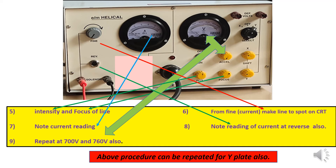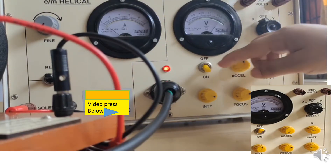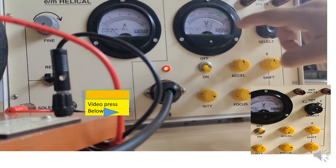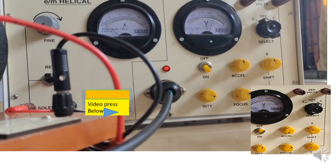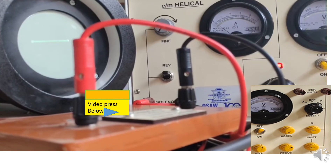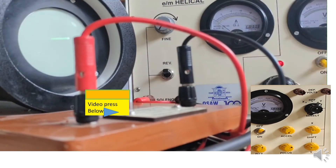We move the current knob so that the line becomes a spot on the cathode tube. Then we note the reading of the current. We take the same reading for the reverse current as well. This whole process can be repeated for 700 volts and 760 volts. We have done this for the x plate, but the same can be done for the y plate by selecting it and adjusting the line length accordingly.